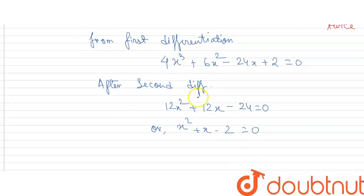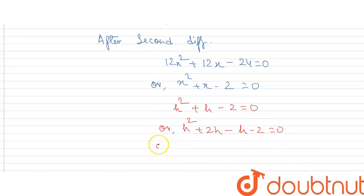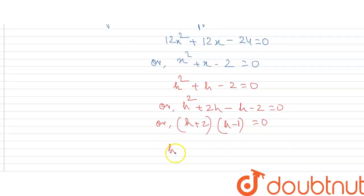Now we will put in place of x, h. This will be h² + h - 2 = 0. Or we can write h² + 2h - h - 2 = 0. Or it is (h + 2)(h - 1) = 0. Here we will get h = -2 and h = 1.